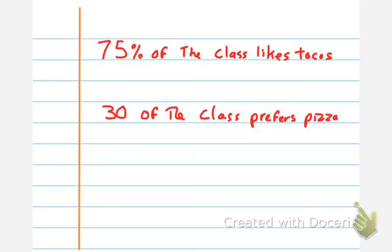So here we have two classes. We have a class where 75% of the class likes tacos. We have another one where 30% of the class prefers pizza. Well, how do we make this into a ratio? How do I know how many tacos do I order compared to other things? Well, to do that, I have to take first my 75% and make it into a fraction. I can do that by making it 75 over 100.